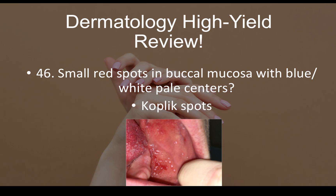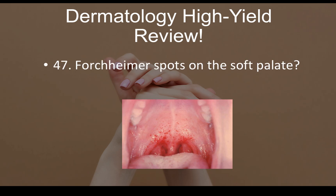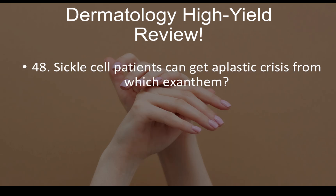Question number forty-seven: Forchheimer spots on the soft palate — that is rubella. Question number forty-eight: sickle cell patients can get aplastic crisis from which exanthem? The answer is fifth disease — slapped cheek, parvovirus B19. If the stem mentions sickle cell history with aplastic crisis, think fifth disease.